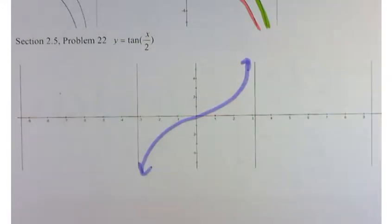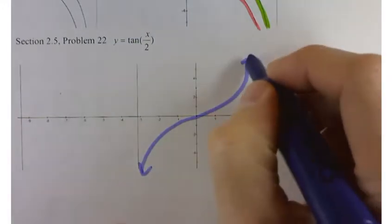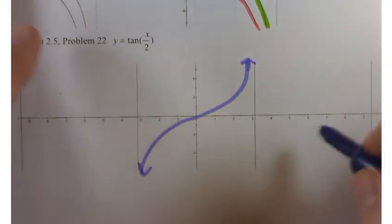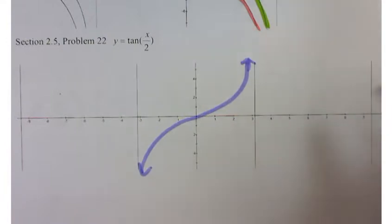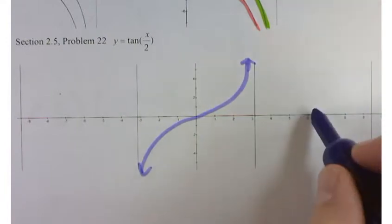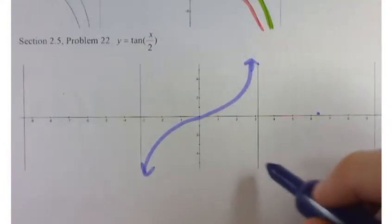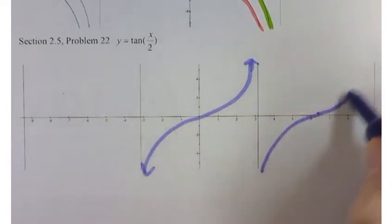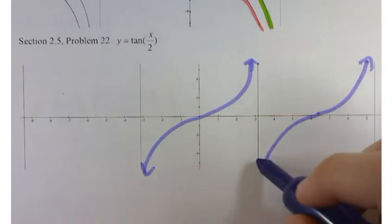So our graph here is going to look something like this. Again, these are asymptotes. Your graph should approach but not touch these lines. And it's going to go through the center here. So that's going to be at 2π.